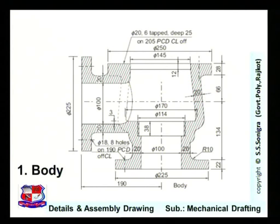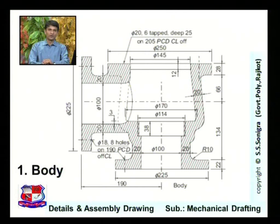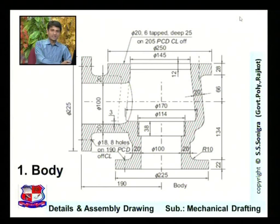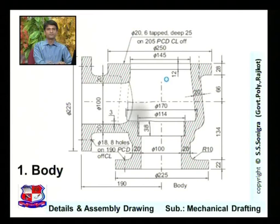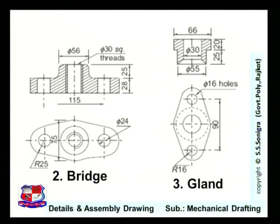This is the first component of the steam stop valve — its main body, as seen in the animation. This is the portion through which steam enters, and through the other portion steam goes out. Dimensions are inserted according to standard notations using the aligned method of dimensioning. Sectional lines are shown where the material is cut. This is the detail drawing of the body, followed by the second component — the bridge, shown in front view and top view with dimensions — and the third component, the gland, with its front view and top view.